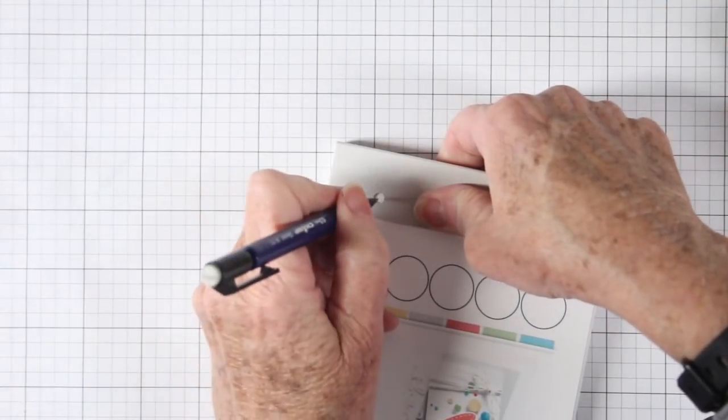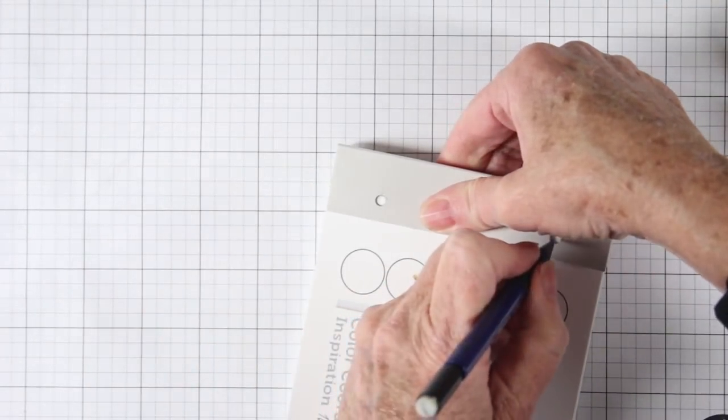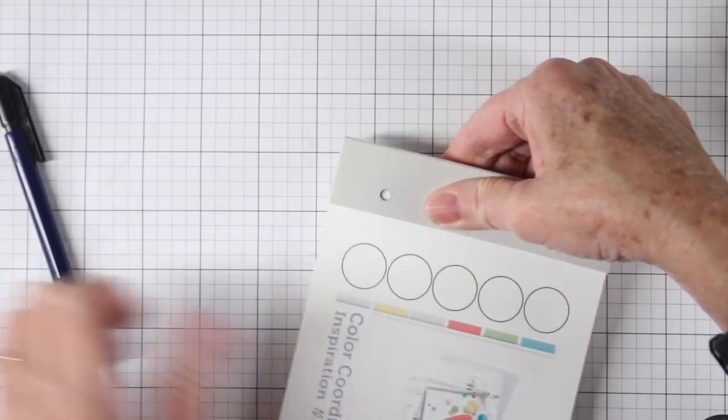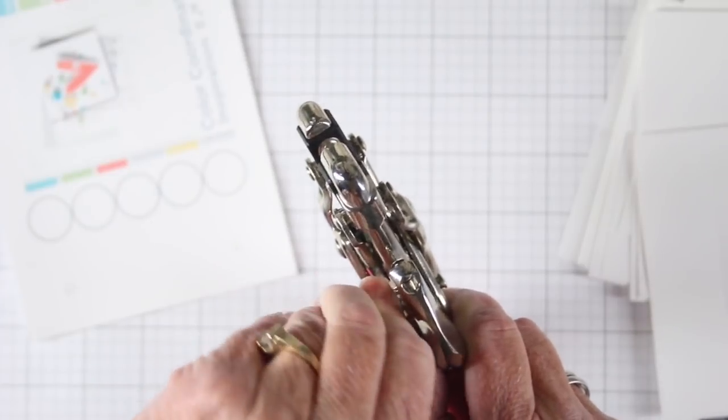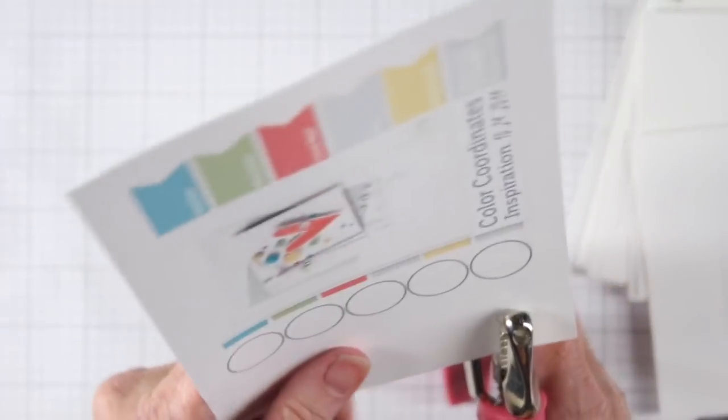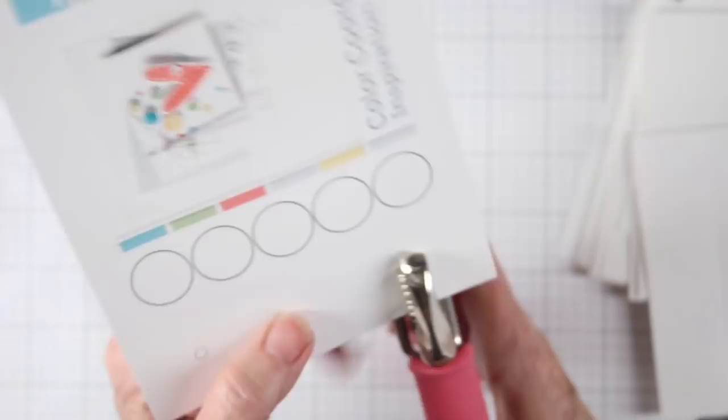Next I want to place my end cover over my booklet and I am using my pencil to mark where I want to punch these holes. Once I have those marked I'll adjust my Crop-A-Dial once again so that it fits center to my pencil marks.